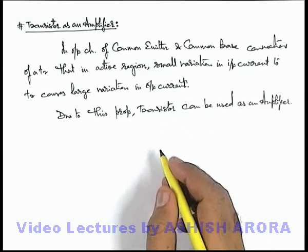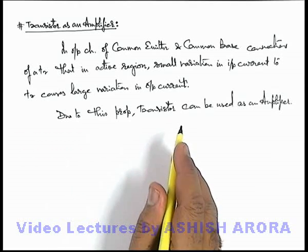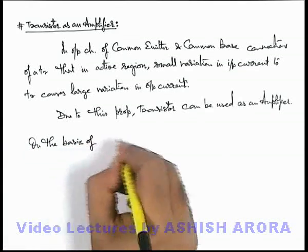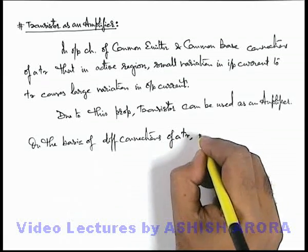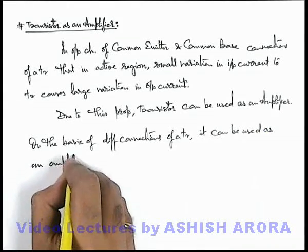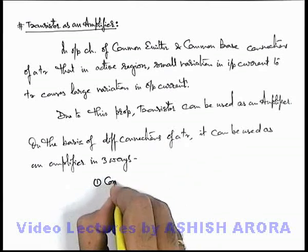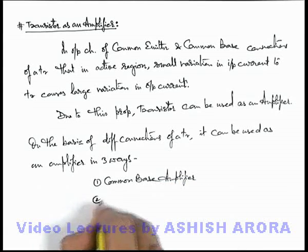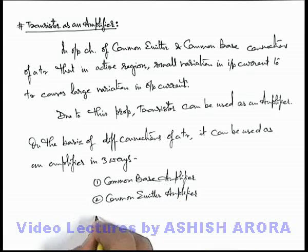This is the characteristic of a transistor which we are going to study in detail — how, due to this property, amplification action can be understood for a transistor. We can also write that on the basis of different connections of a transistor, it can be used as an amplifier in three ways. These three kinds of amplifiers are called based on the type of connection: common base amplifier, common emitter amplifier, and common collector amplifier.